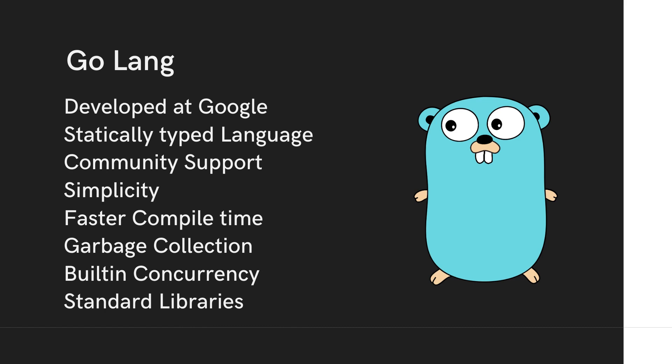As with any programming language, the success and popularity of a language depends on the community itself. Go language has an excellent community that will help every developer — whether getting started or already expert — to get information and support. This is a very good part of Go language: it has an excellent community to support each and every one.